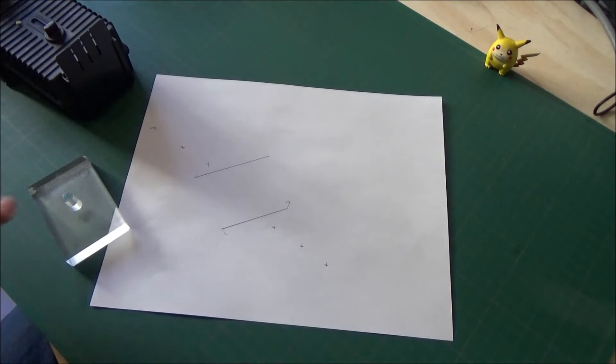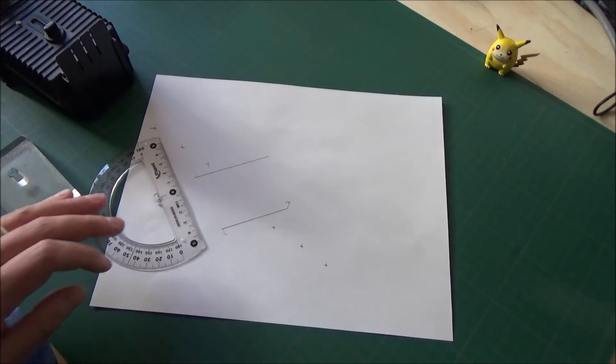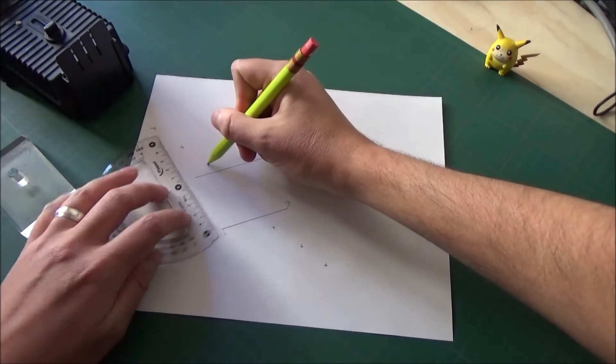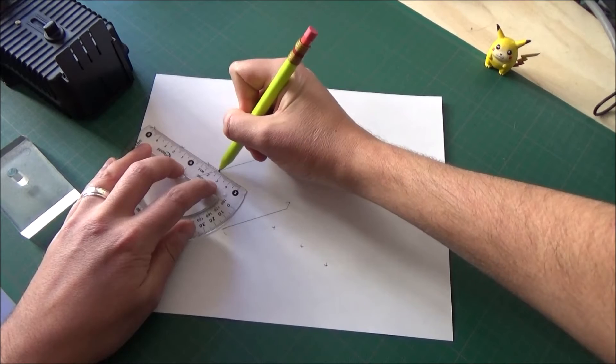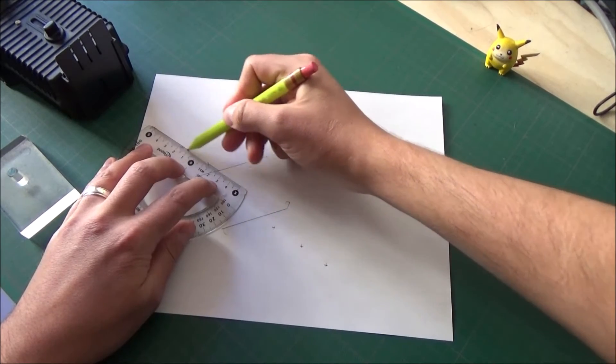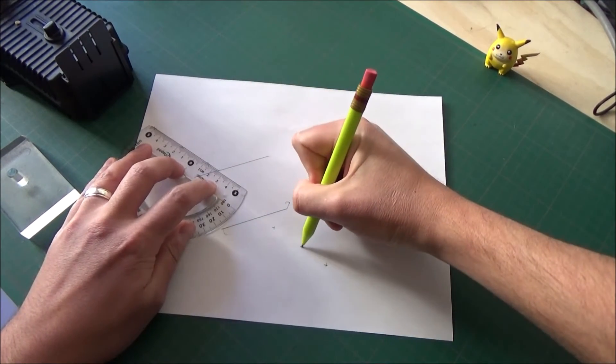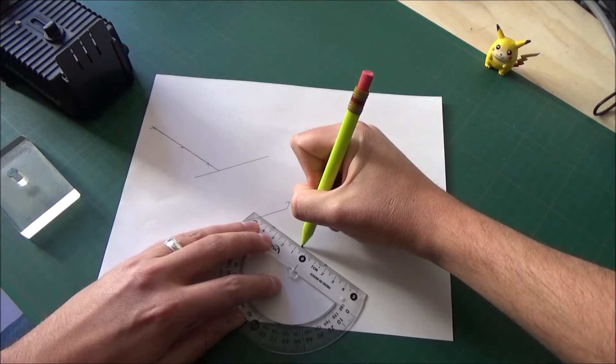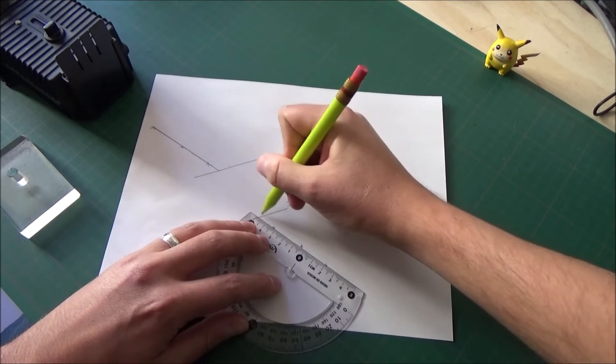You can see there we've definitely got some refraction when I remove the block. And now, with a straight edge, I'm just using the flat side of my protractor. I'm going to draw a line of best fit for those points, stopping at the boundary of the perspex, and I'm going to do the same for the ray once it leaves the perspex, stopping at the boundary of that perspex again.